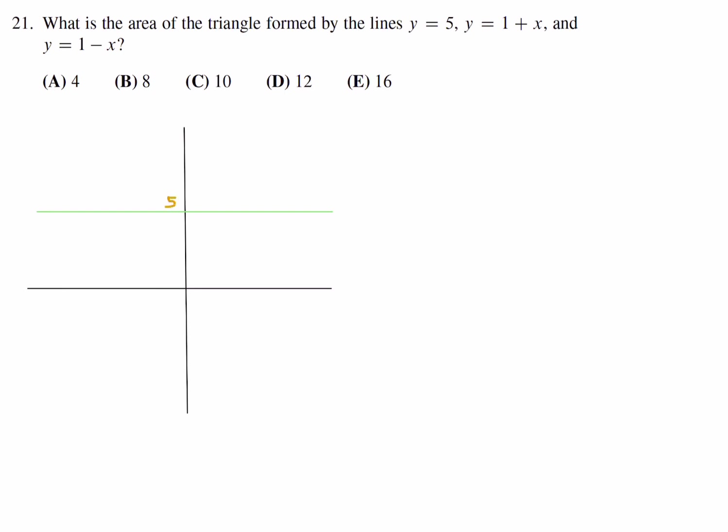And then the other two, y equals 1 plus x and y equals 1 minus x, we can just plot a couple points and then join them. So for this one, y equals 1 plus x, when x is 0, y is 1, and when x is negative 1, y is 0. So let's draw a line through those two points, and you get something like that.